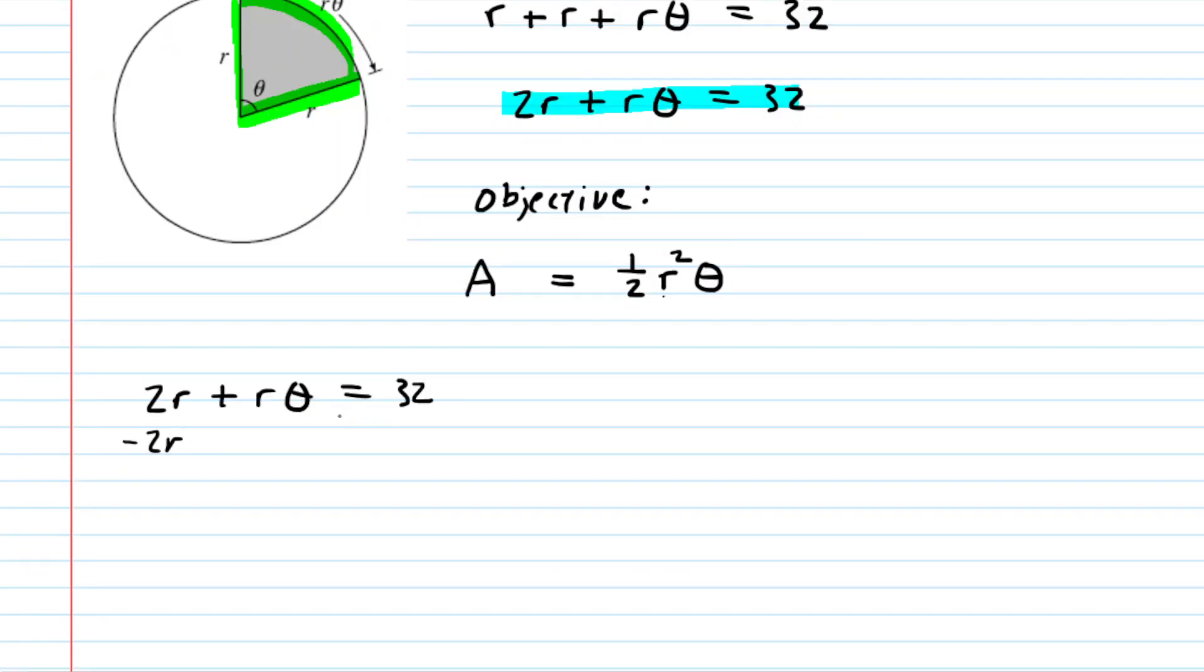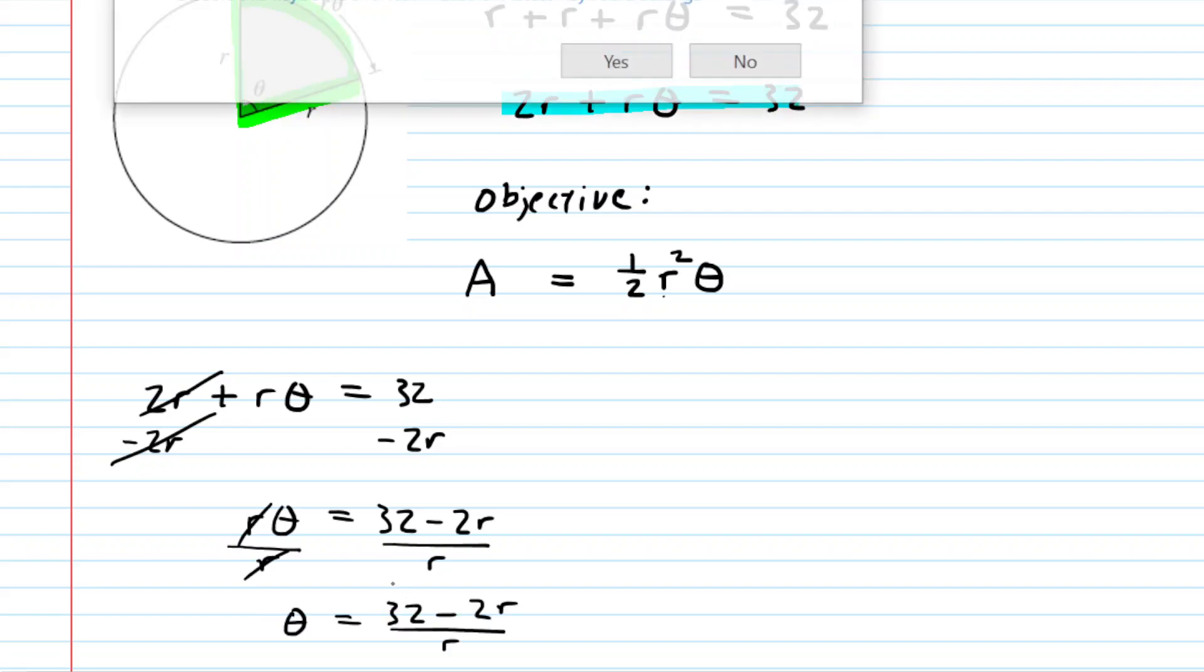To do that, we can begin by subtracting both sides of the equation by 2r. That'll cancel it on the left-hand side. And then divide both sides of the equation by the radius r to cancel it on the left side again. So this would be our expression for theta in terms of r.